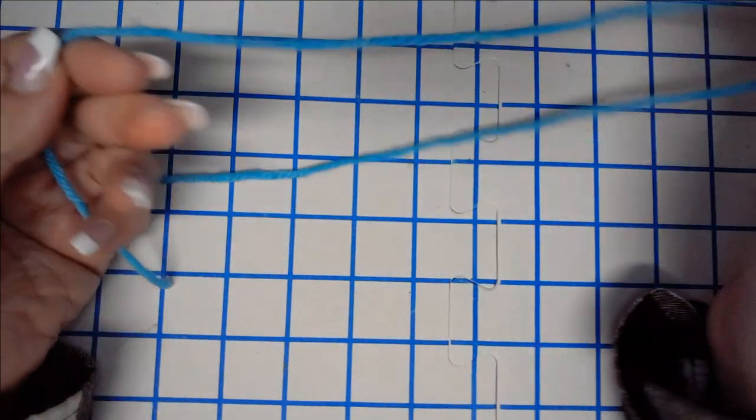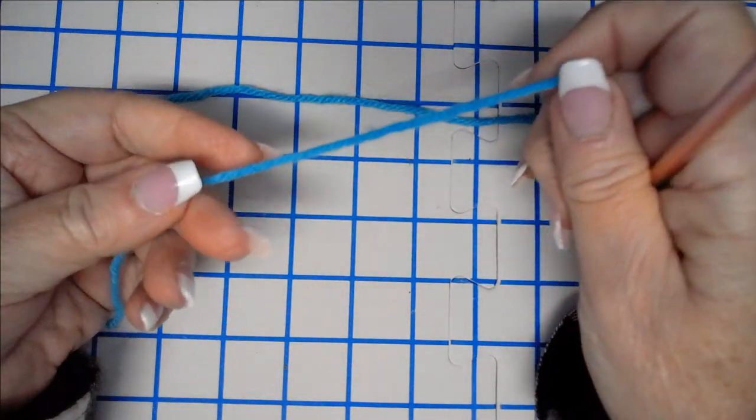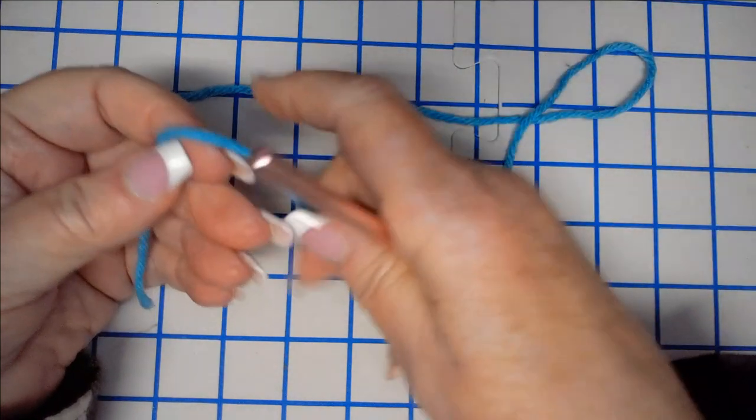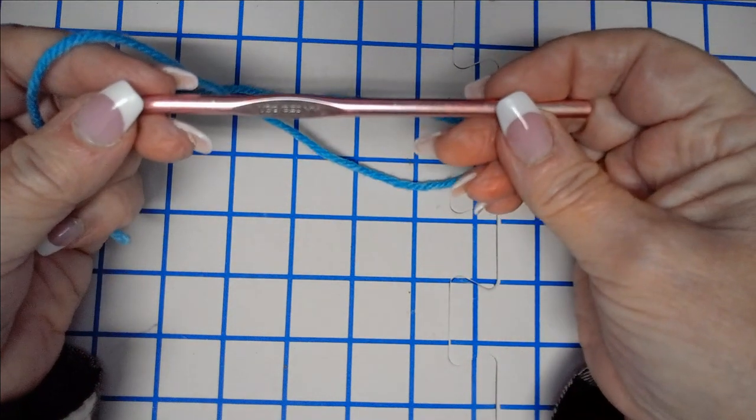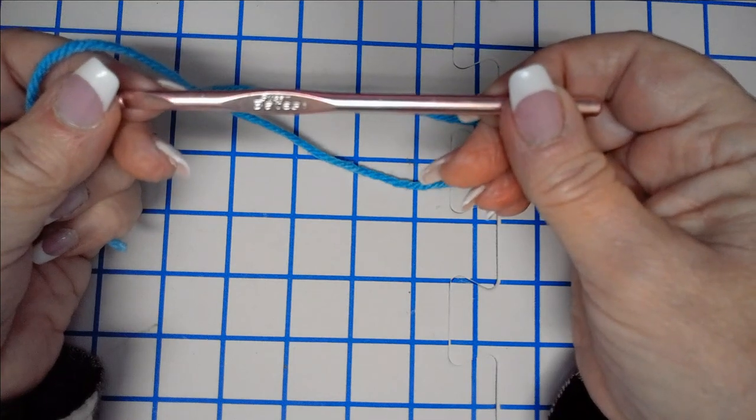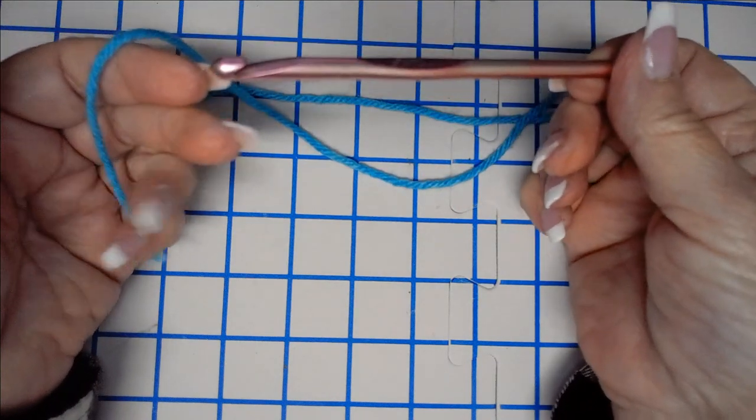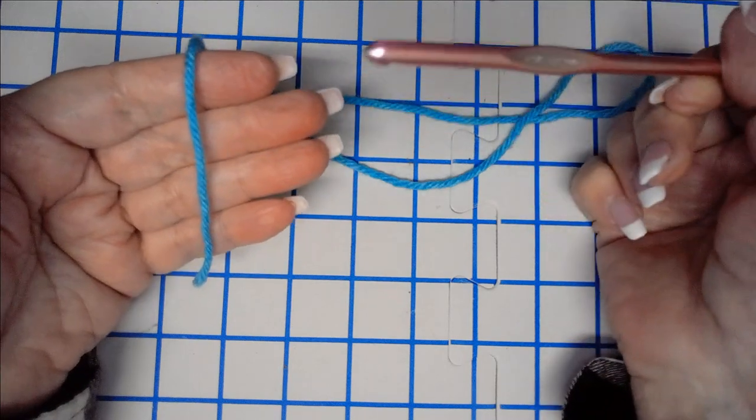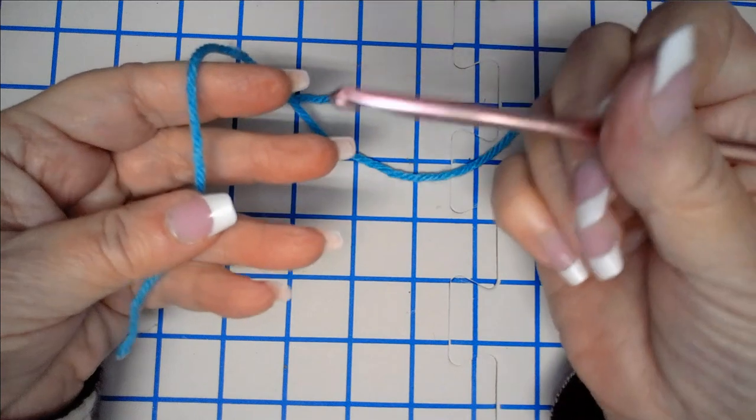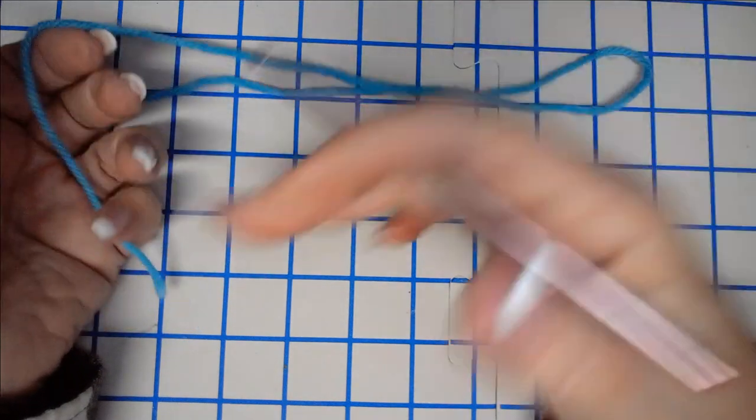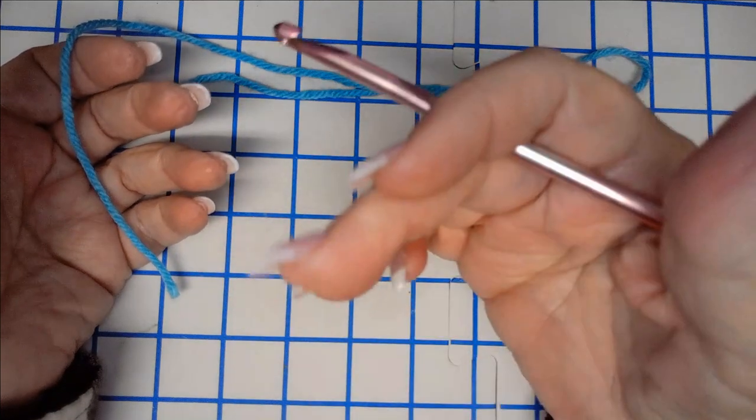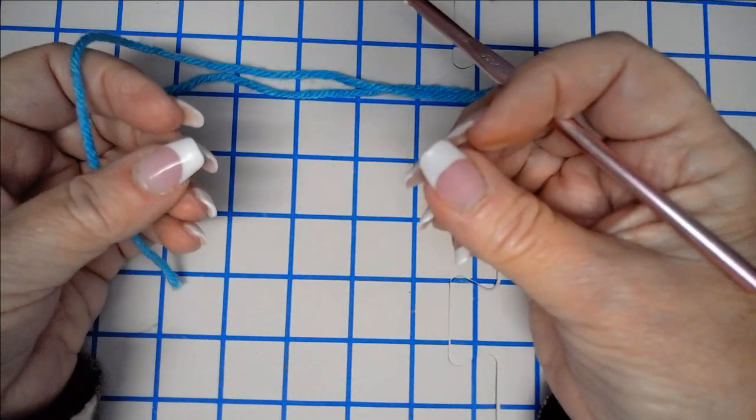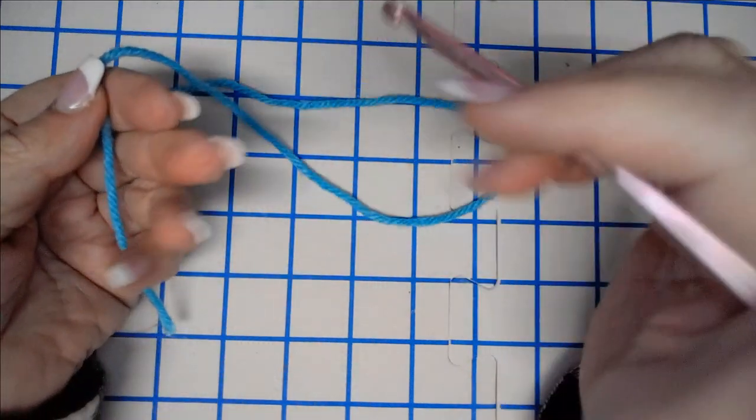All right. So for this demonstration, I am going to be using Red Heart Super Savers four-weight worsted yarn. This is, I believe, iced blue. And I'm also going to be using a size I, Susan Bates 5.5 millimeter hook. You can use any hook that you wish. Now for this four-weight here, I believe that this is the recommended size. I have gone up a hook size and I've gone down a hook size. So it's just going to be your own preference as to how tightly you want the stitches to be.